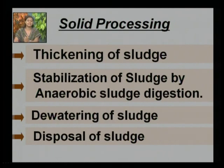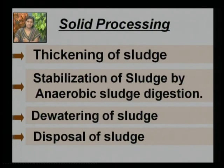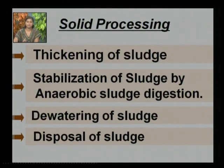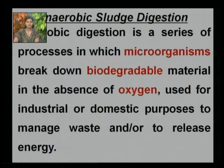An important step is thickening of the sludge, which can be done by gravity thickening. In gravity thickening, the water content is removed from the sludge and the sludge mass is prepared in such a way that it is ready for anaerobic sludge digestion — a very important biological process in which thermophilic organisms are used. Dewatering and disposal of sludge follow, and the final sludge can be used as compost.